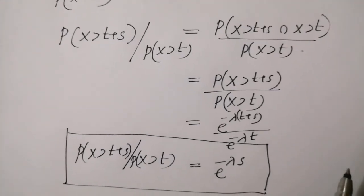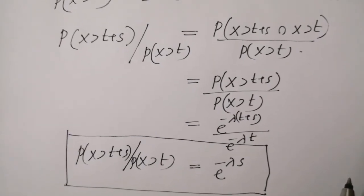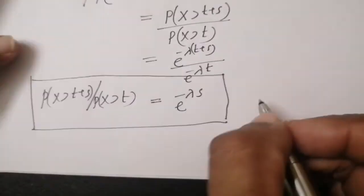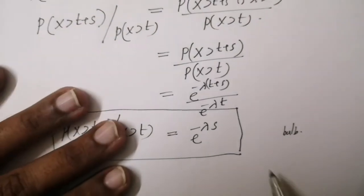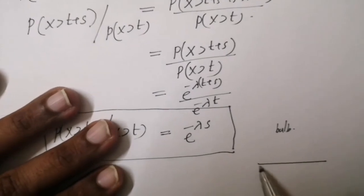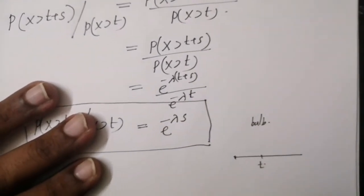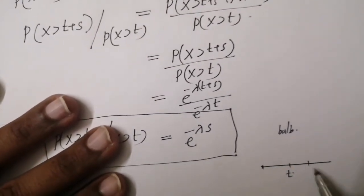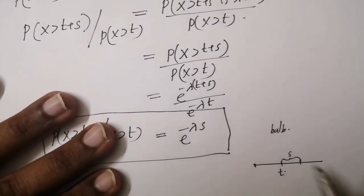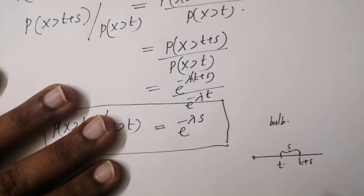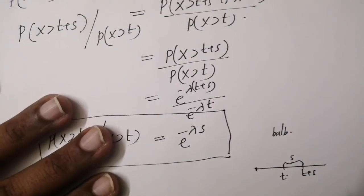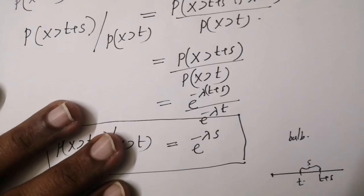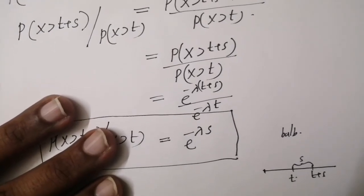The physical significance of the memoryless property: consider a bulb that survives for t units of time. The chance that it survives for a further s units of time is the same as that of a fresh bulb surviving s units of time. In other words, past history has no effect on the bulb's performance.